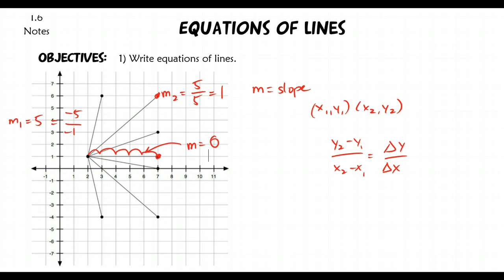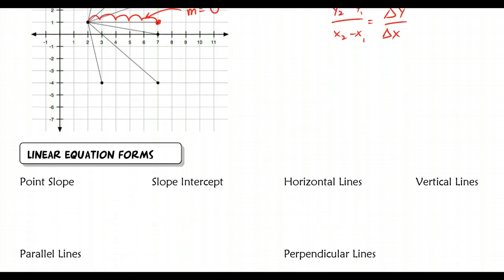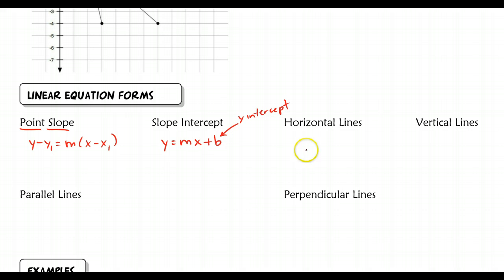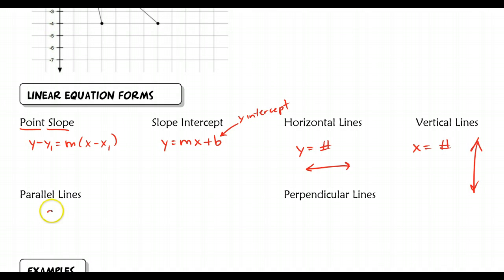Now I'd like to talk about linear equation forms. Point-slope form is y minus y1 equals m times x minus x1. You just need a point and the slope to write a line in this form. For slope-intercept form, you need to know a specific point — the y-intercept — so it's more restrictive. Horizontal lines are always written as y equals some number; vertical lines as x equals some number. For parallel lines, we need the same slope; perpendicular lines have opposite reciprocal slopes.